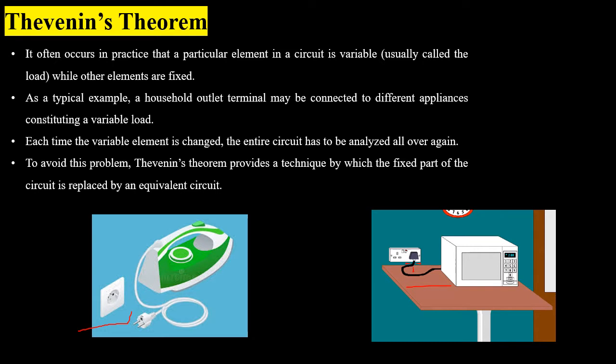The solution to this repeated calculation is Thevenin theorem, in which we divide the given circuit into two parts. First is the fixed part and second is the variable part to which we connect the load. By doing this we don't have to repeat the calculations, as we have data for the fixed part of the circuit and we will just add the value of the load and do the analysis.